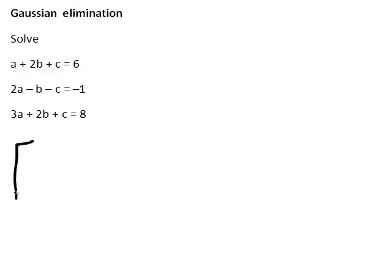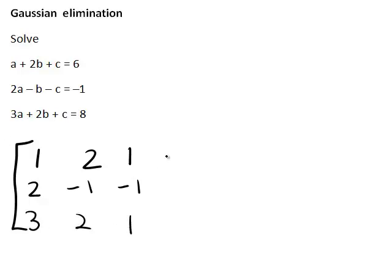This means that we set up a matrix with the coefficients of the unknowns on the left hand side: one, two, one in the first row; two, negative one, negative one in the second row; and three, two, one in the last row. We then also want to put in the constants on the right hand side of this matrix or tableau — in this case those constants were six, negative one, and eight.